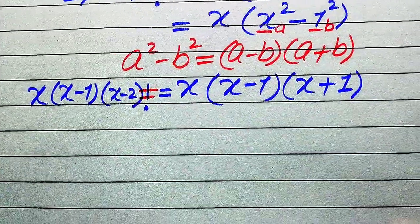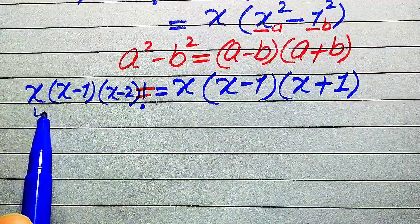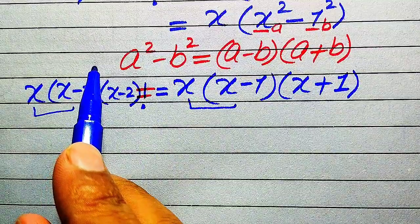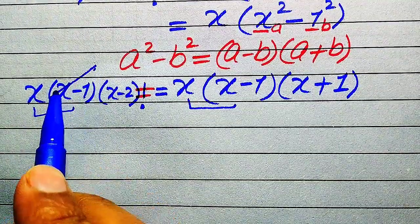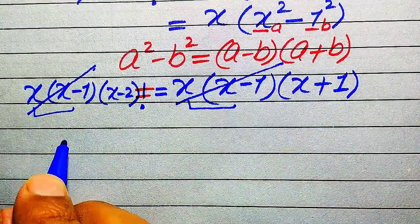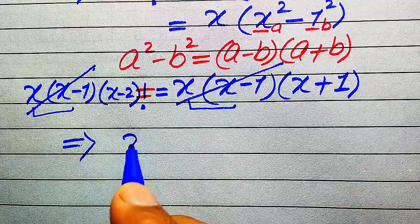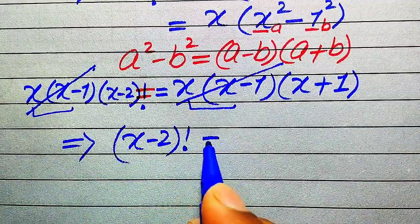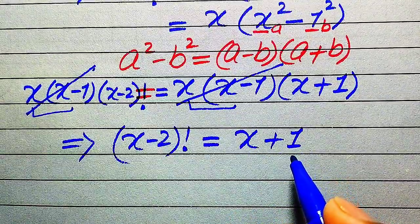You can see that both sides contain the same terms x times (x minus 1). We cancel these from both sides. On the left hand side we are left with (x minus 2) factorial, and on the right hand side we are left with (x plus 1) only.